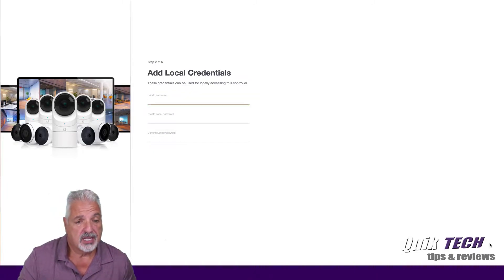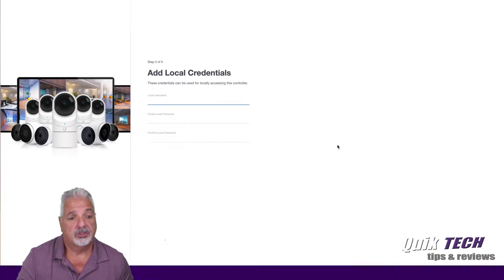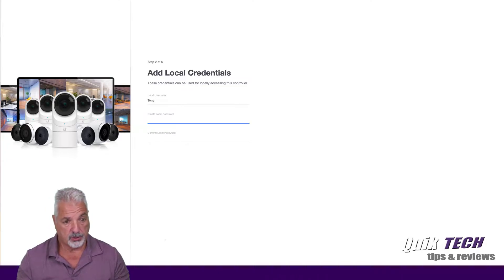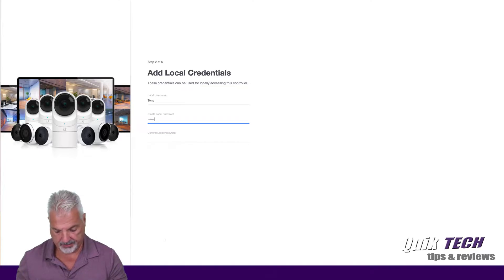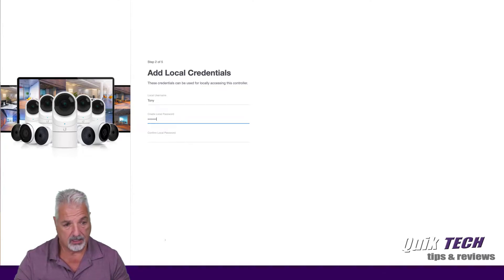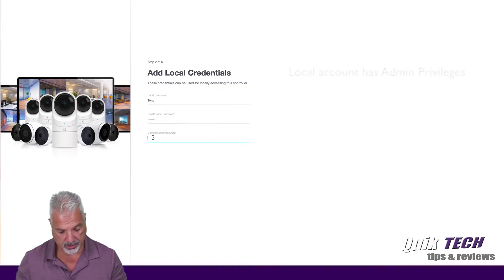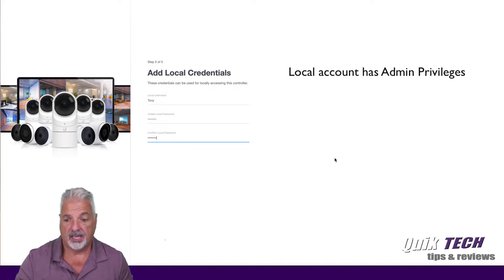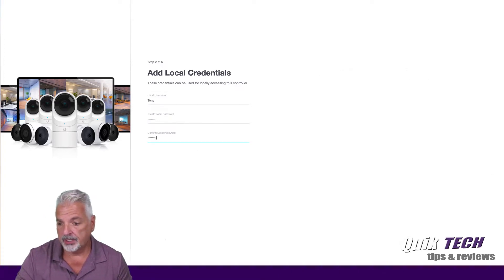Next, step two is asking us to add local credentials that would be used for locally accessing the controller. So we'll keep it simple for the video — username will be Tony and the password will be 12345678. We have to enter the password twice, and then again come all the way over to the lower right hand corner of the screen to click Next.